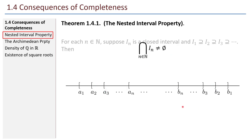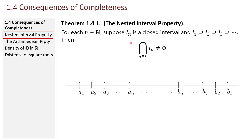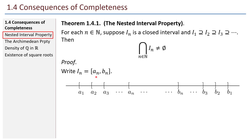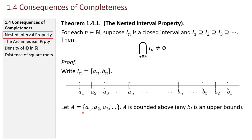For each natural number n, suppose interval Iₙ is a closed interval and I₁ contains I₂, contains I₃, and on and on forever. Then the intersection of all these intervals is not empty. For the proof, write interval Iₙ as the closed interval with left endpoint aₙ and right endpoint bₙ. Consider all the left endpoints: capital A is the set of all those left endpoints a₁, a₂, a₃, … Now, the set A is bounded above — in fact, it's bounded above by any bᵢ. Make sure you can convince yourself that's true.